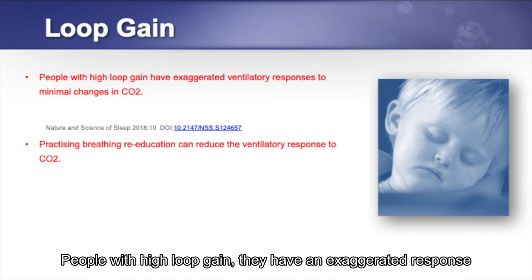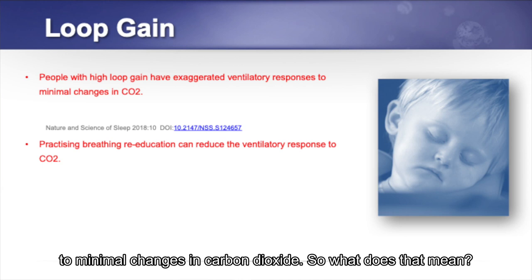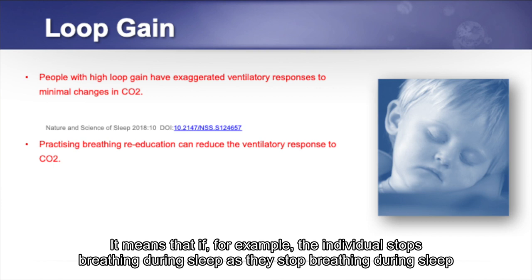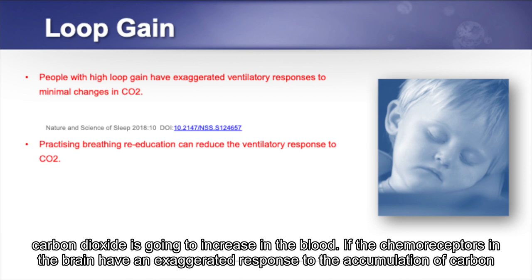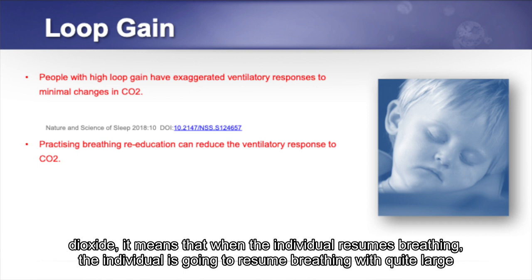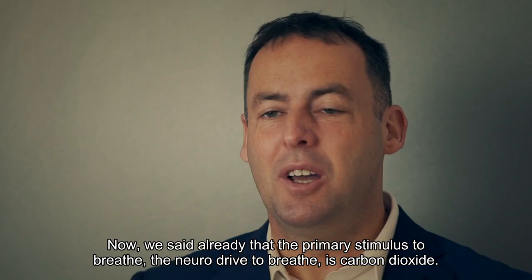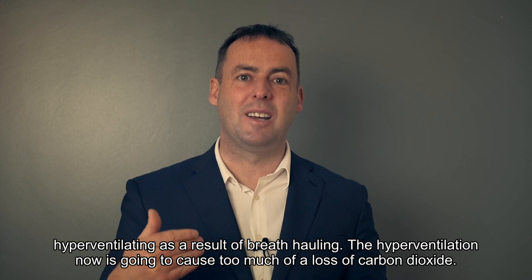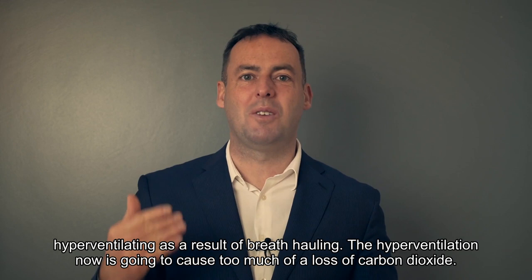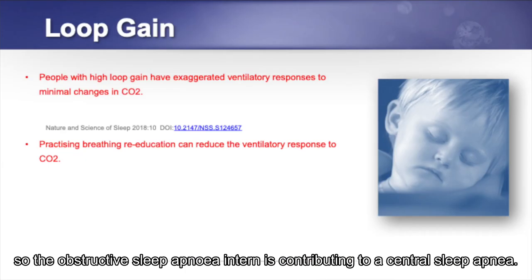People with high loop gain have an exaggerated response to minimal changes in carbon dioxide. When an individual stops breathing during sleep, CO2 increases in the blood. If the chemoreceptors have an exaggerated response to that CO2 accumulation, when the individual resumes breathing they do so with very large ventilation, causing too great a loss of carbon dioxide. Since CO2 is the primary neural drive to breathe, this hyperventilation — following breath holding — now causes too much CO2 loss, reducing the drive to breathe, so OSA contributes to a central sleep apnea.